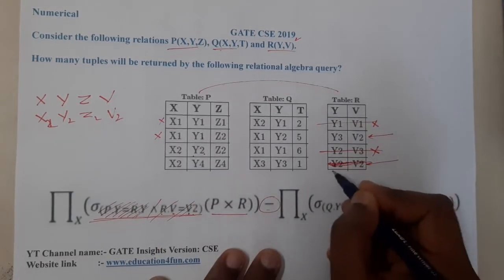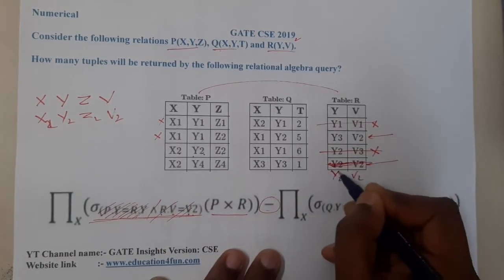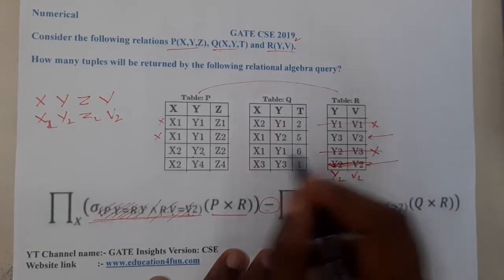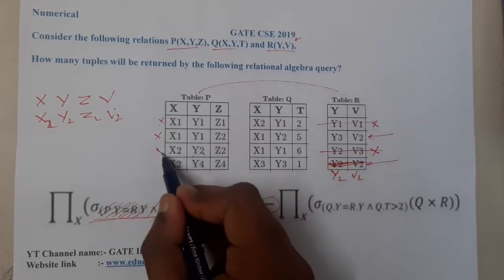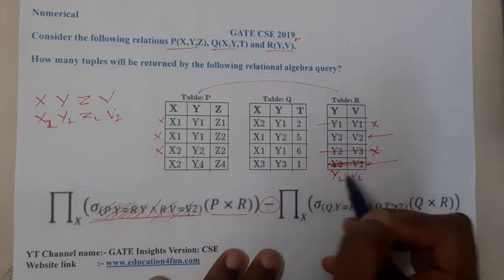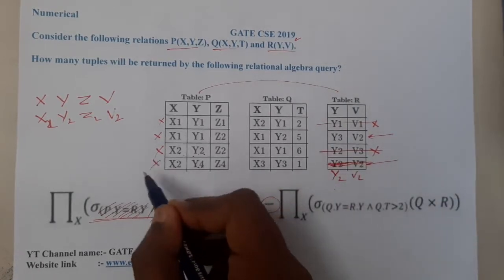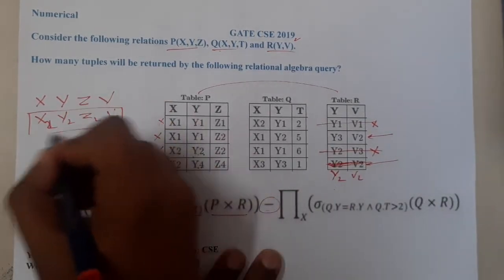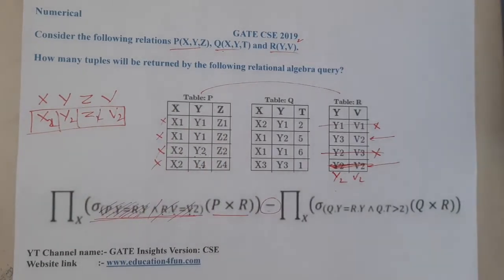After that, this row's work is done. So basically, Y2, V2, these two rows are gone and these two rows are available. So this is mapped with this, so this work is done. And this Y4 will not map with anyone, so this is done. So at the end we got only one single row.